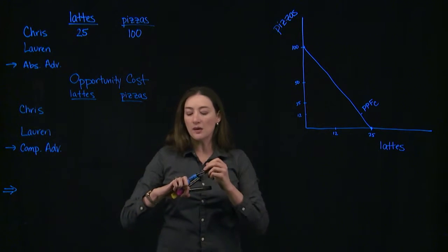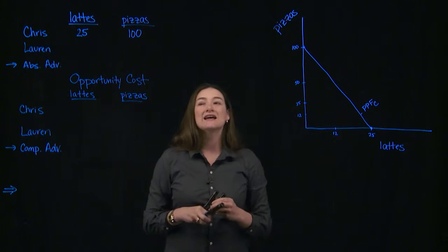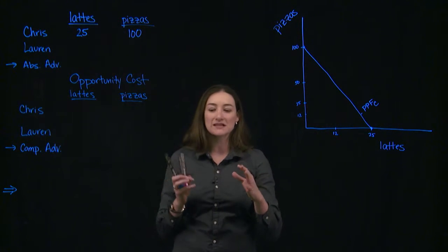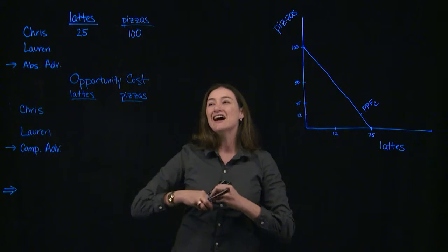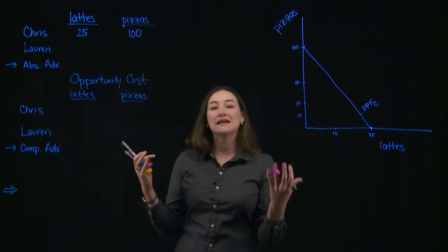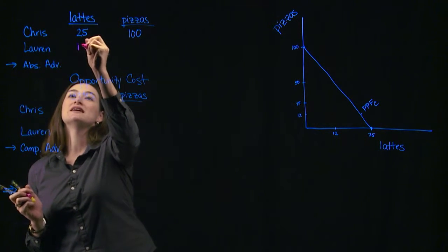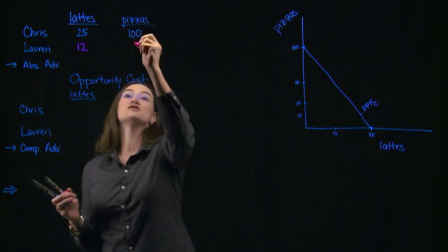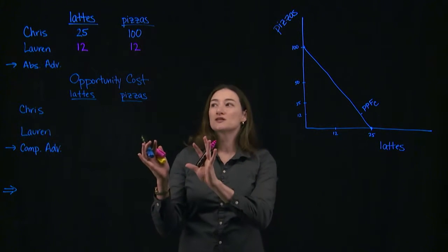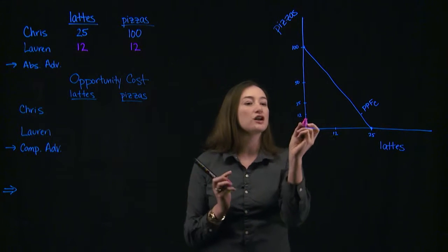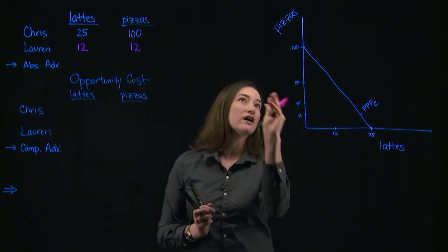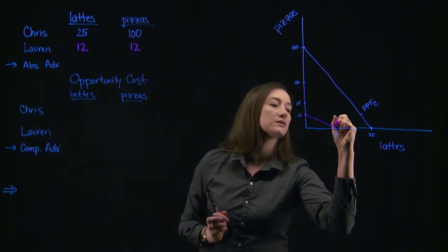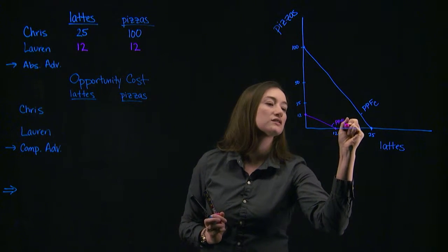Now let's imagine Lauren. Lauren is a lot more careful when she produces, so it takes her a longer amount of time to produce one latte or one pizza. She might be spending time making pretty designs and latte art, or she's very methodical about how she places the pepperoni. The best she could do is produce 12 lattes, or if she spent all her time producing pizzas, the best she could do would be 12 pizzas. This line becomes her production possibilities frontier — the PPF for Lauren.